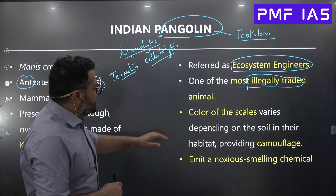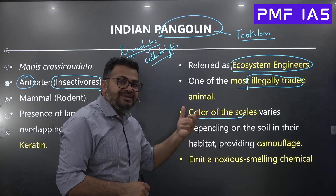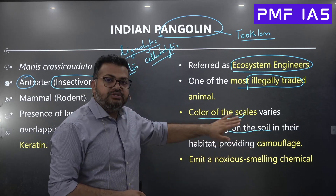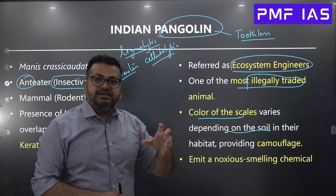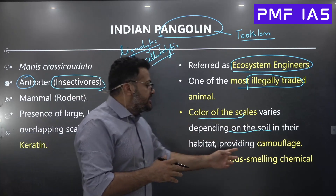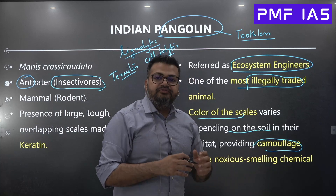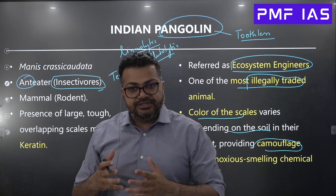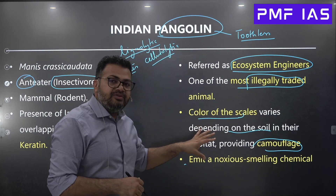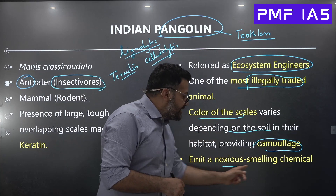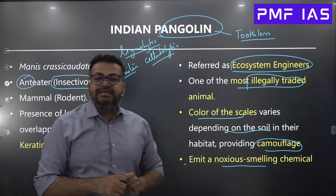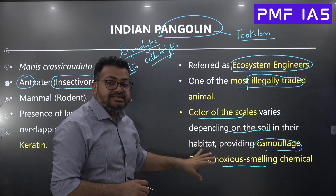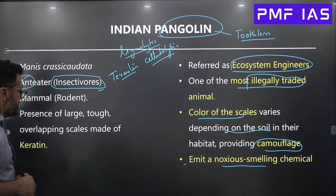When it comes to the colors of pangolin scales, they normally depend on the color of the soil where they are found. This creates a kind of camouflage for pangolins, helping them protect themselves against predators. Additionally, pangolins can create a noxious-smelling chemical which can also push predators away — these are some of the natural defenses pangolins have.